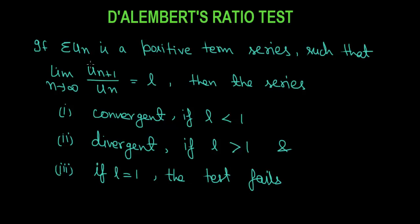So for this positive term series, you will have the nth term and the (n+1)th term. You take their ratio, then apply the limit as n tends to infinity. If the result is less than 1 the series is convergent, if greater than 1 it is divergent, and if l equals 1 the test fails. To understand this, we will take an example.